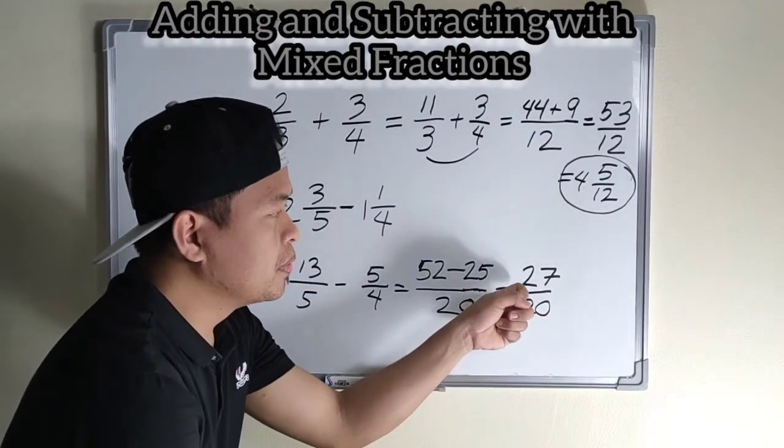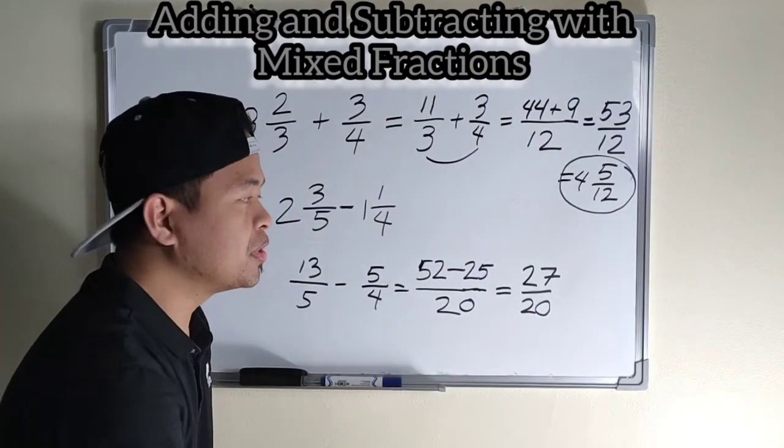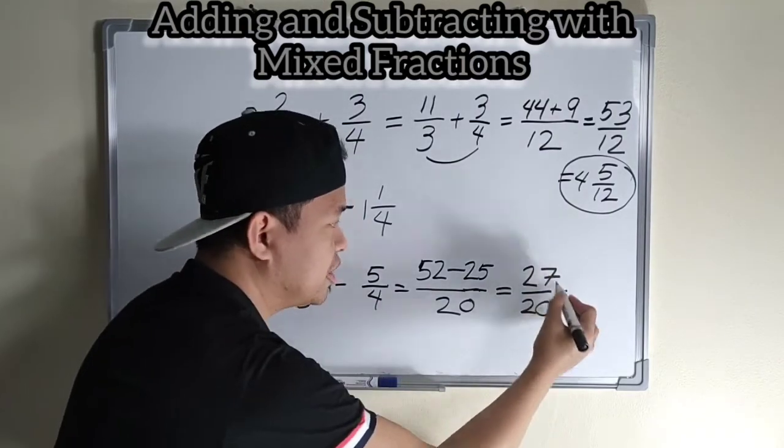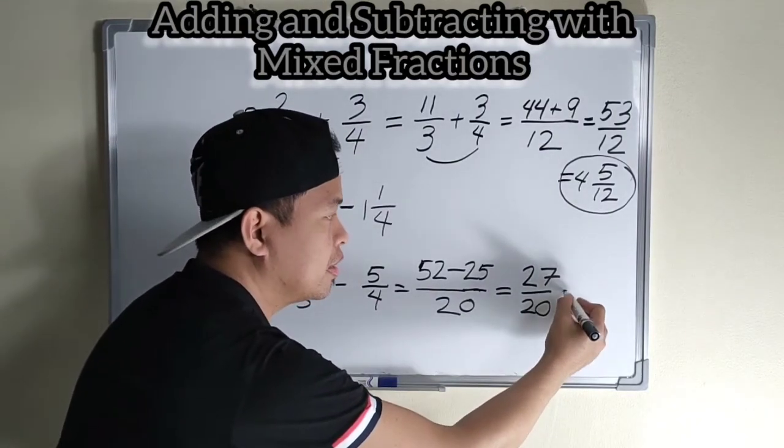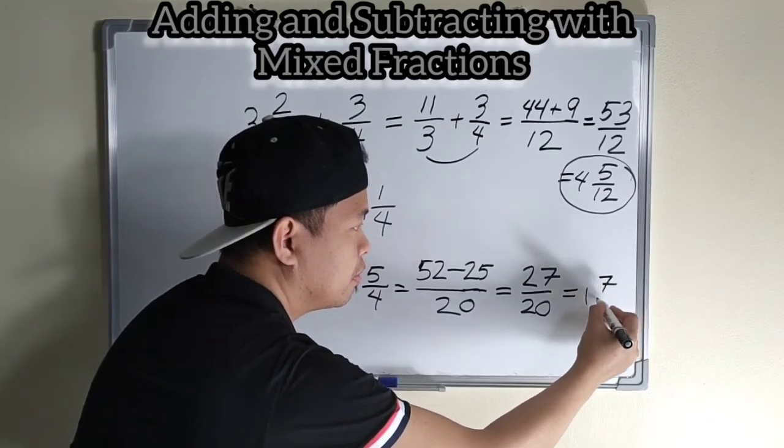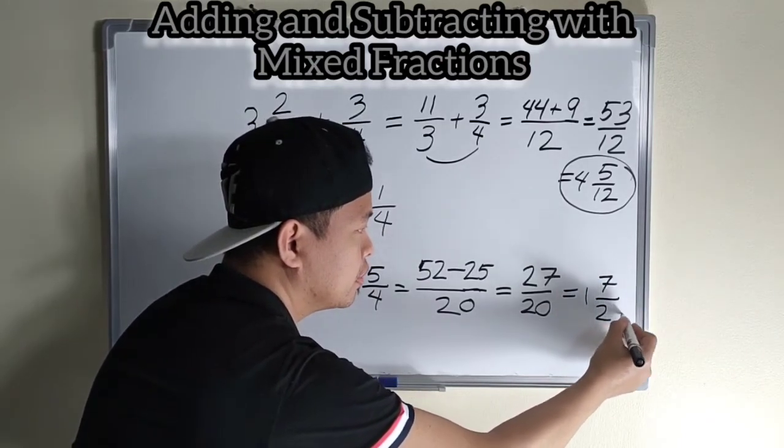This is improper fraction. We need to change into mixed fraction. Twenty-seven over twenty is one and seven over twenty.